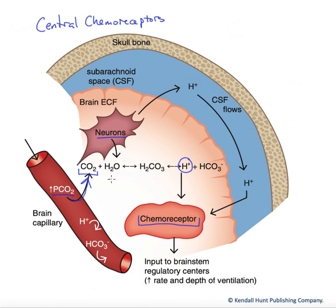This will drive the carbonic acid equation to the right, generating an increased number of free protons, which will increase the stimulation of our chemoreceptors. Neurons are also supplying carbon dioxide and driving this reaction to the right.